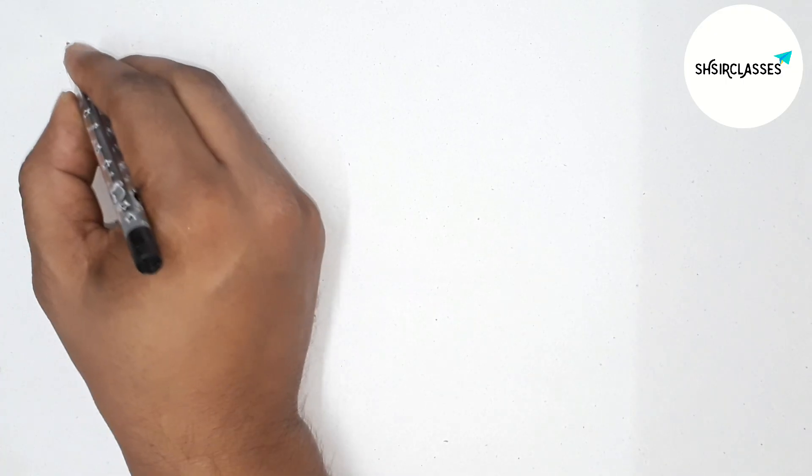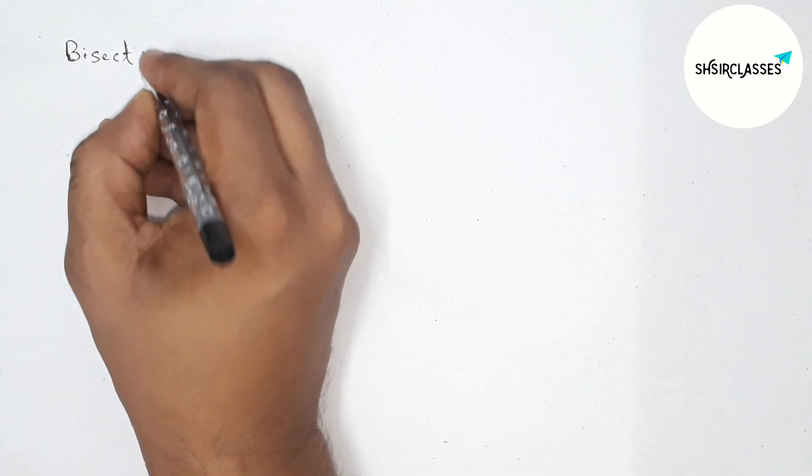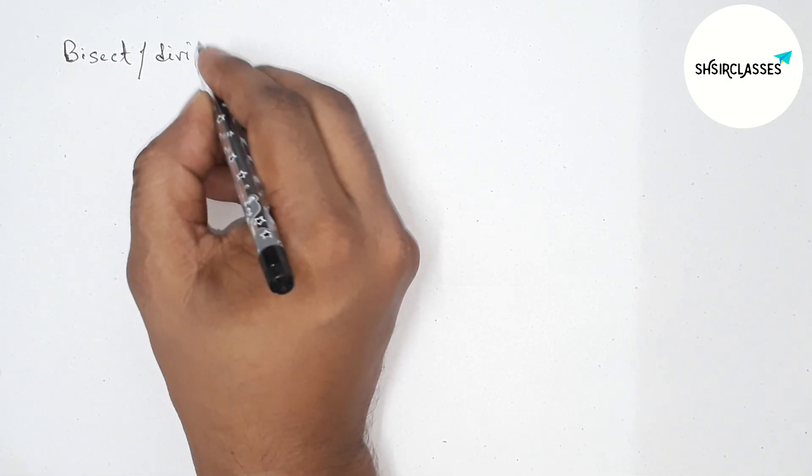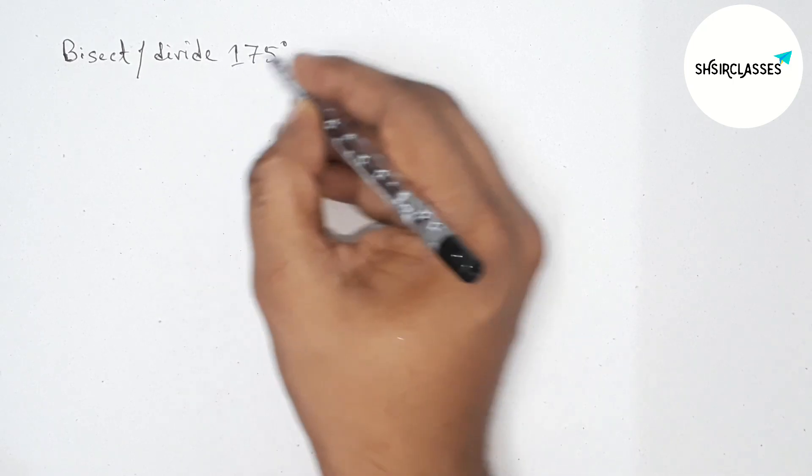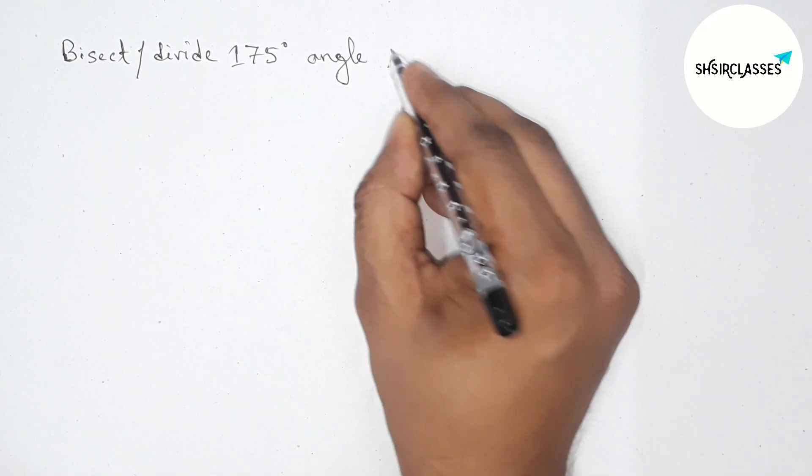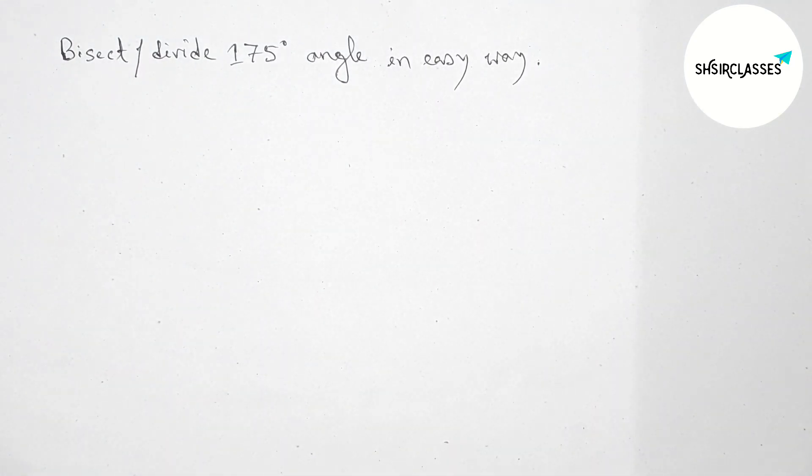Hi everyone, welcome to SI Share Classes. Today in this video, bisect or divide 175 degree angle in easy way. So please watch the video till the end. So let's start the video.